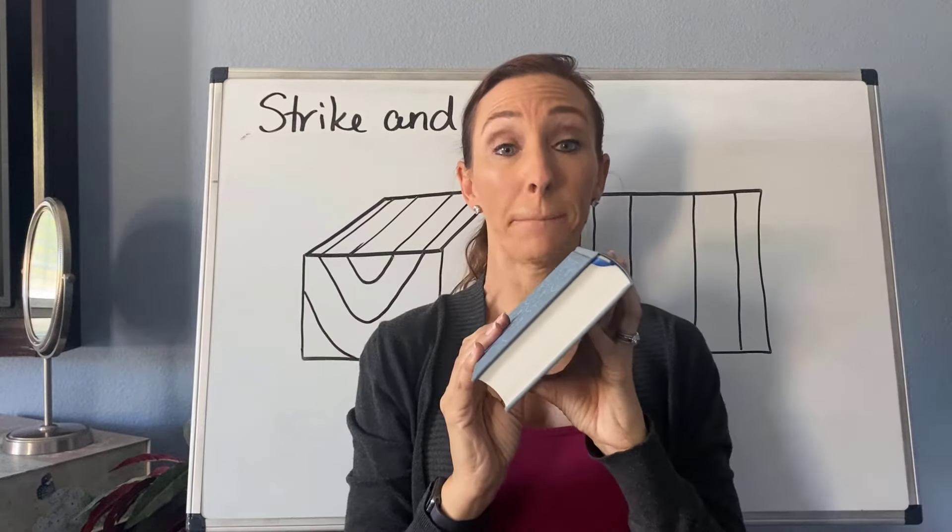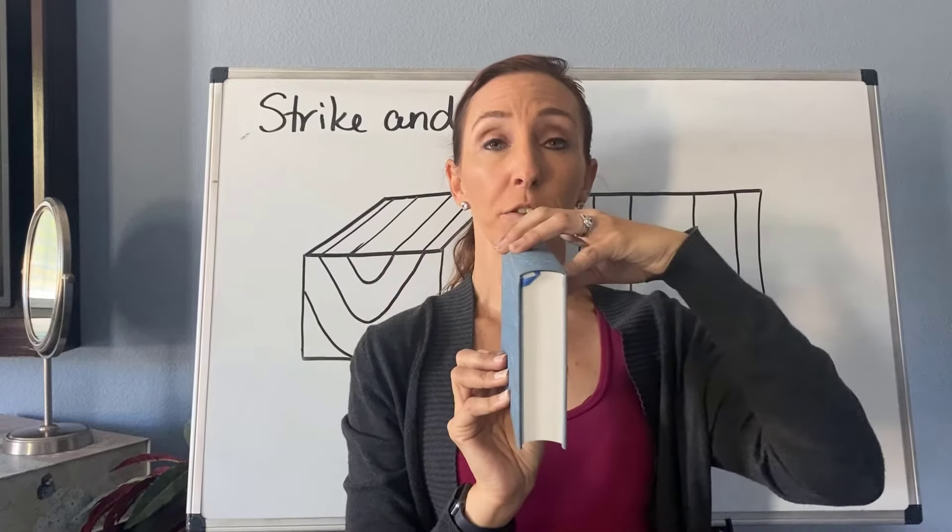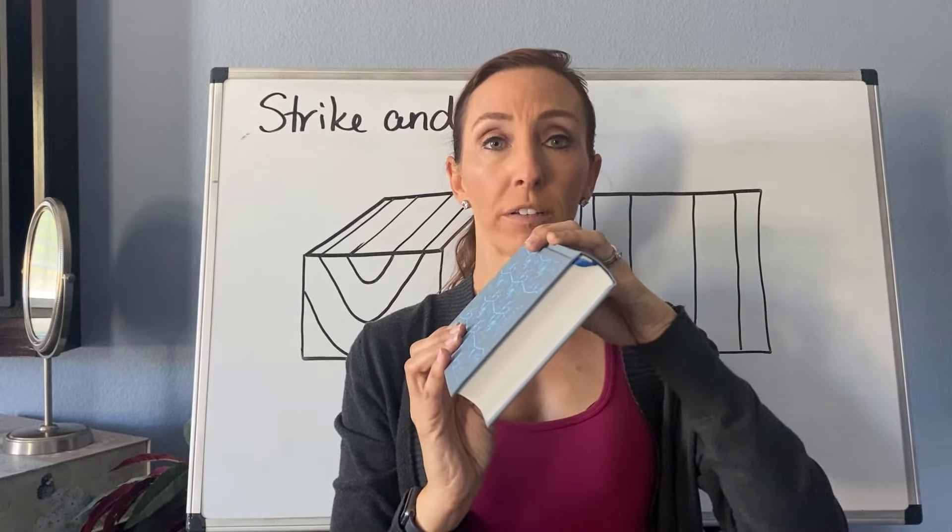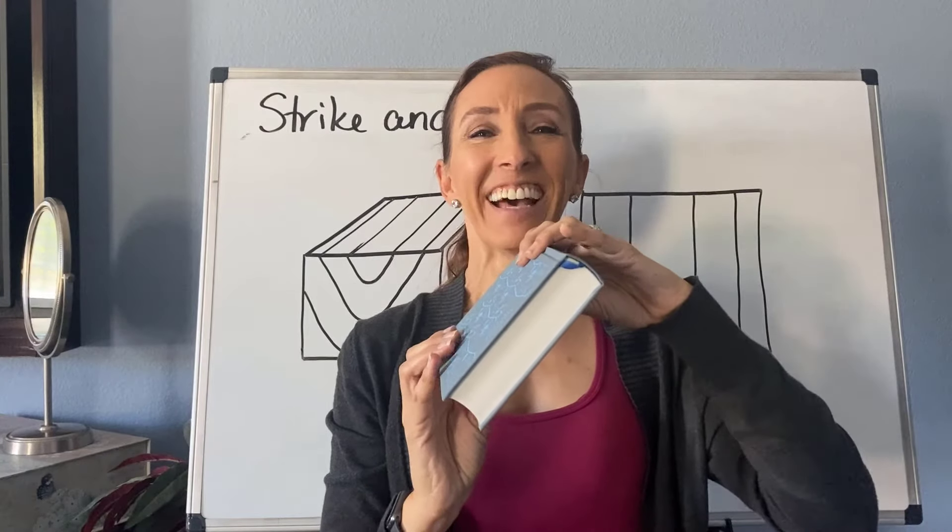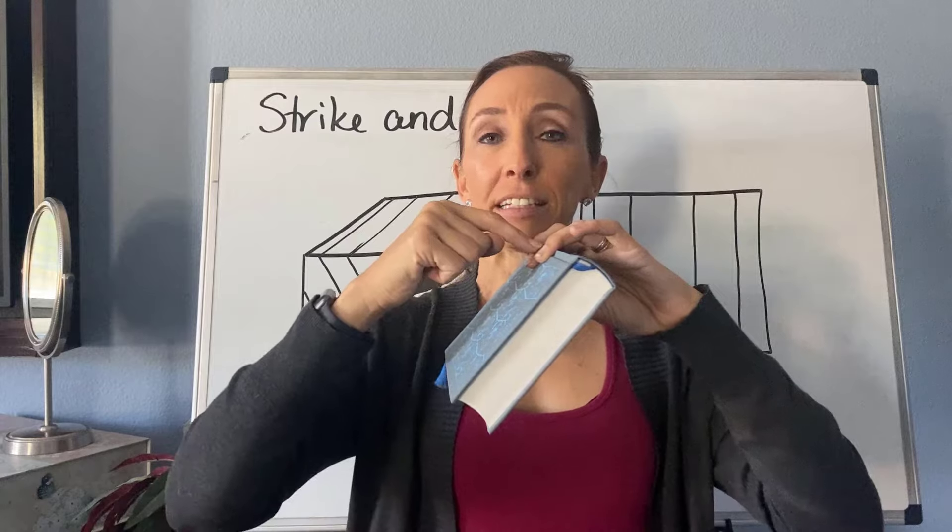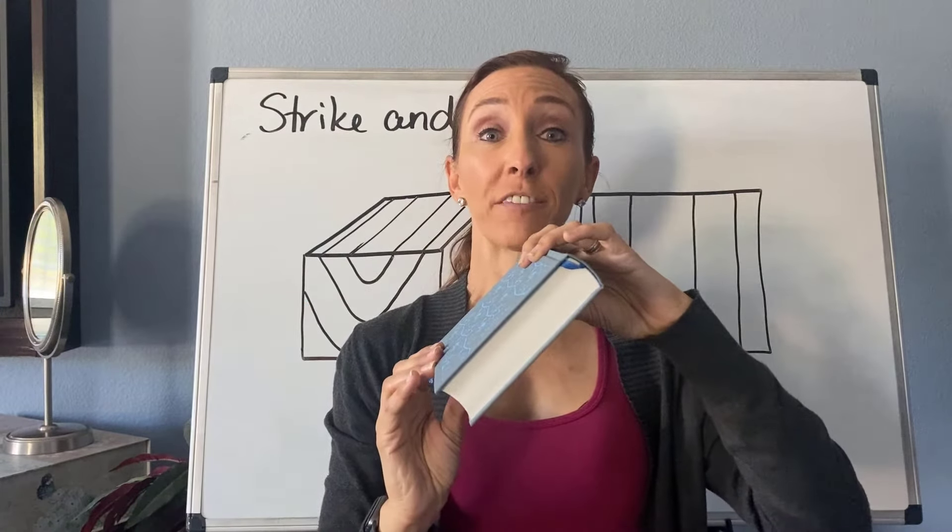And then the last part is the dip amount. So this would be horizontal, zero degrees. This will be vertical, 90 degrees. So I'm going to pick right in between about 45 degrees. Hopefully that's about right. And so I would now say it's striking north, south, dipping to the east and at an angle of 45 degrees.